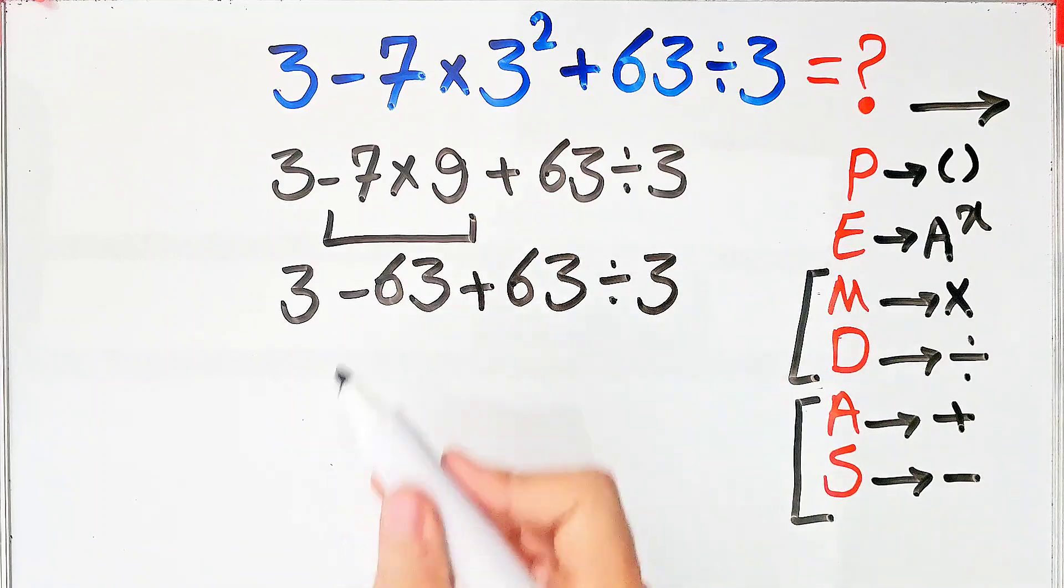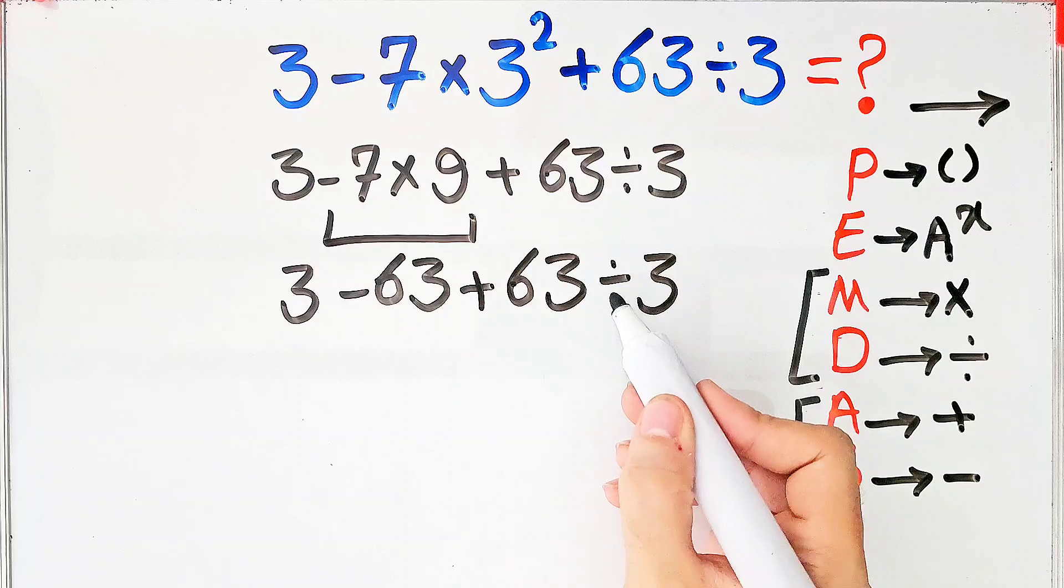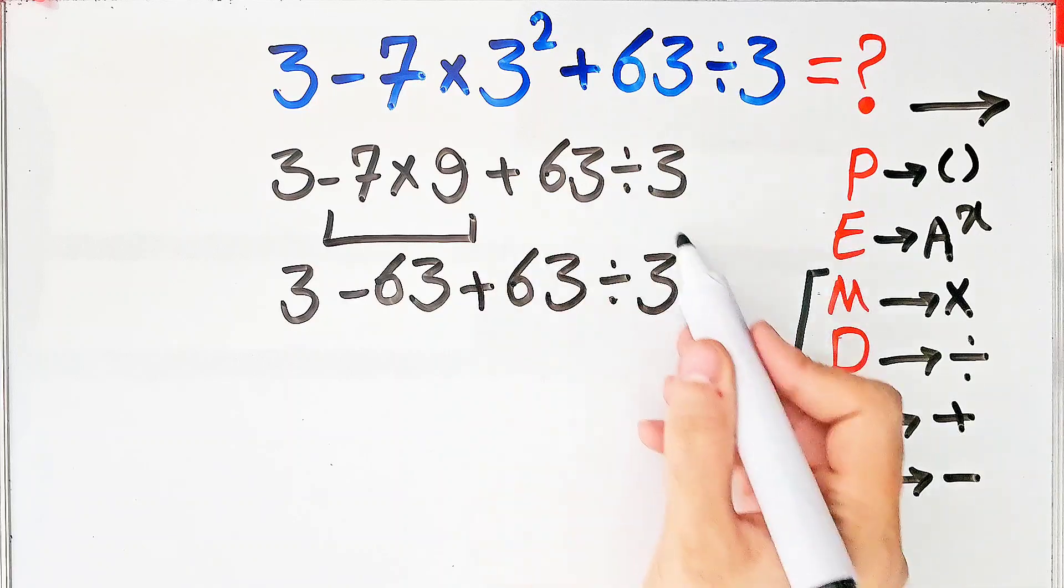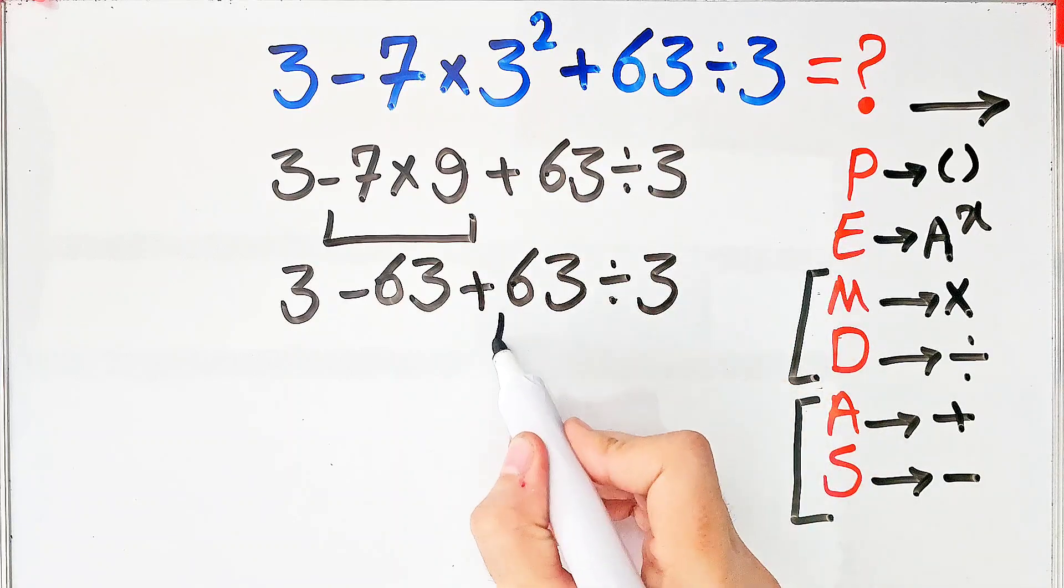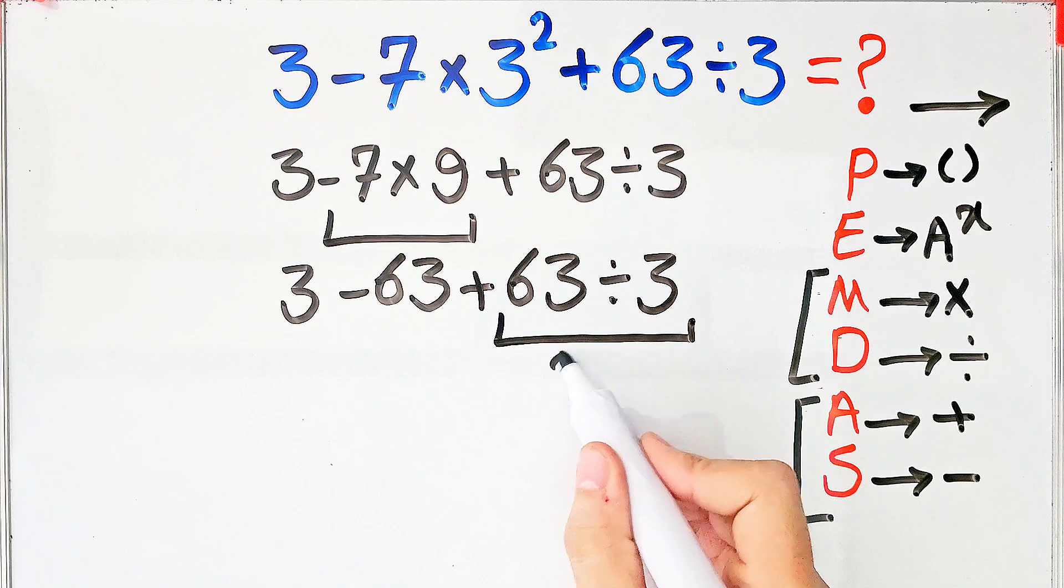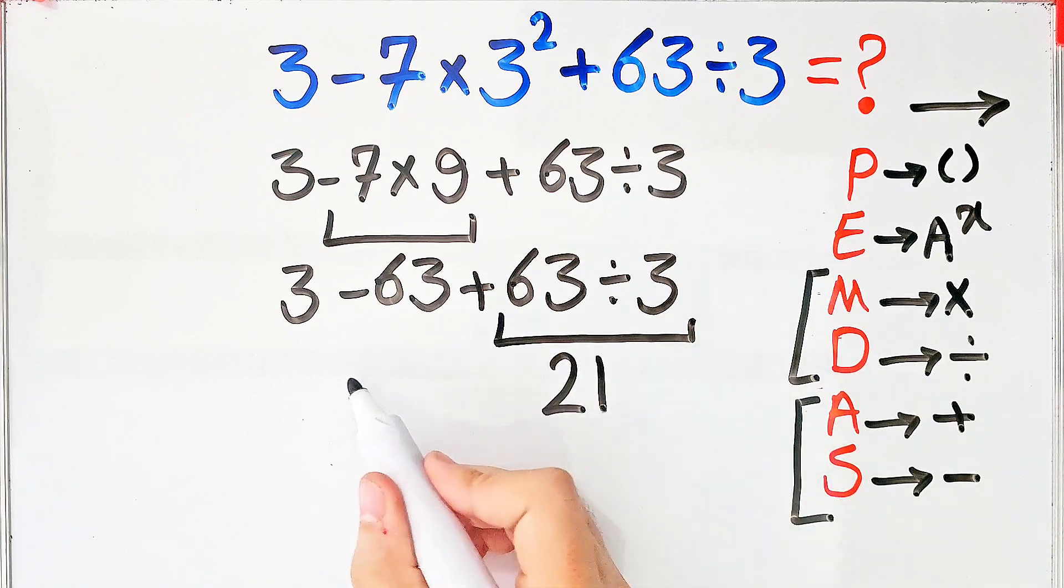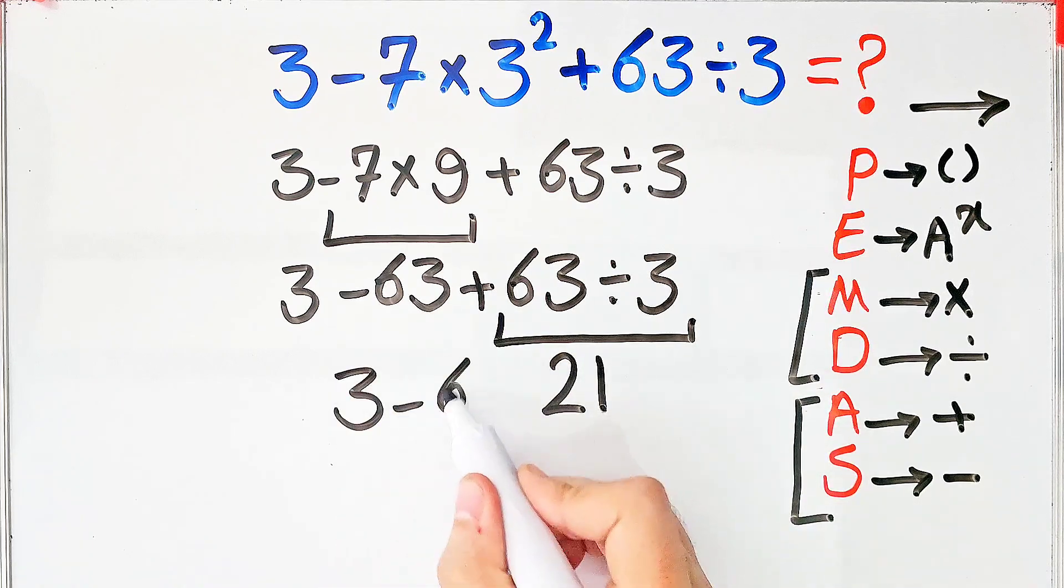Now we have subtraction, addition, and division. First, we do this division. 63 divided by 3 equals 21. Now the question is 3 minus 63, then plus 21.